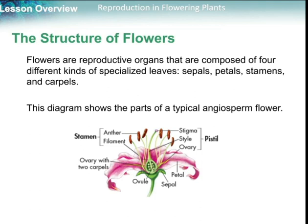The stamen is the male part, and the carpel is the female part. The male part is composed of a filament and anther, where we can find the sperm, which are the gametes for the male part. In the carpel, we have the ovary and stigma, where the male gametes will enter and reach the ovary, where we can find the ovules or eggs, which are the female part.